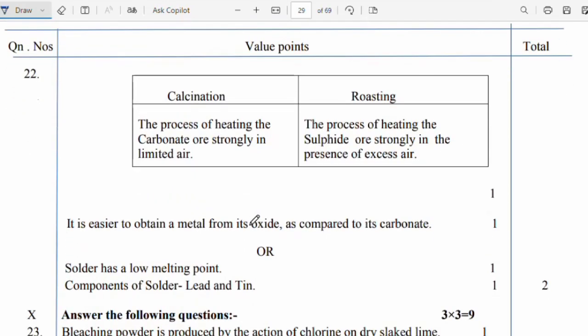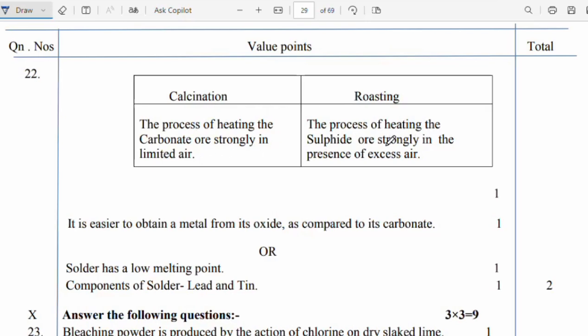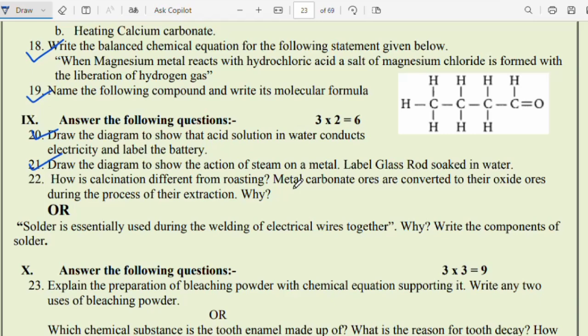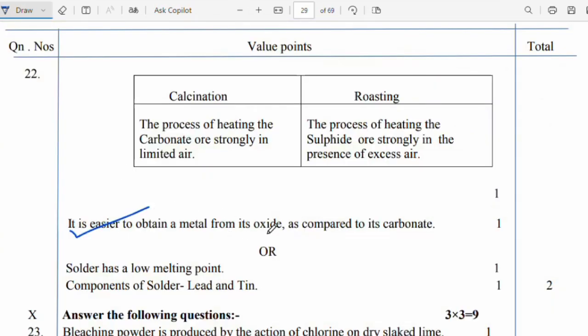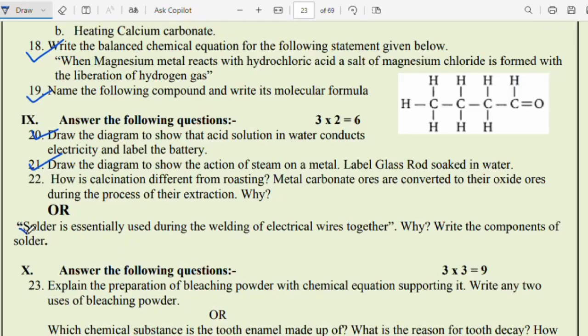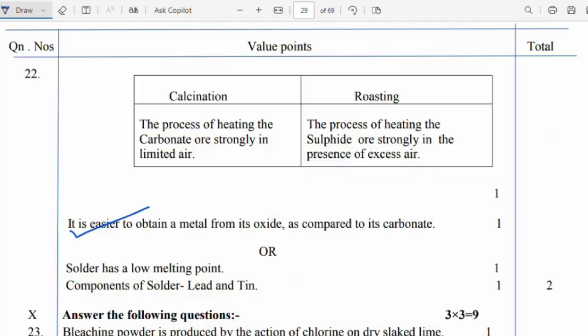Question 22: Differentiate between calcination and roasting. The process of heating the carbonate ore strongly in limited air is calcination. The process of heating the sulphide ore strongly in the presence of excess of air is called roasting. Metal carbonate ore is converted into their oxide ore during the process of extraction because it is easier to obtain the metal from its oxide as compared to its carbonate. Or, solder is essentially used during welding of electrical wires together. Why? Write the components of solders. It has low melting point. The components are lead and tin.